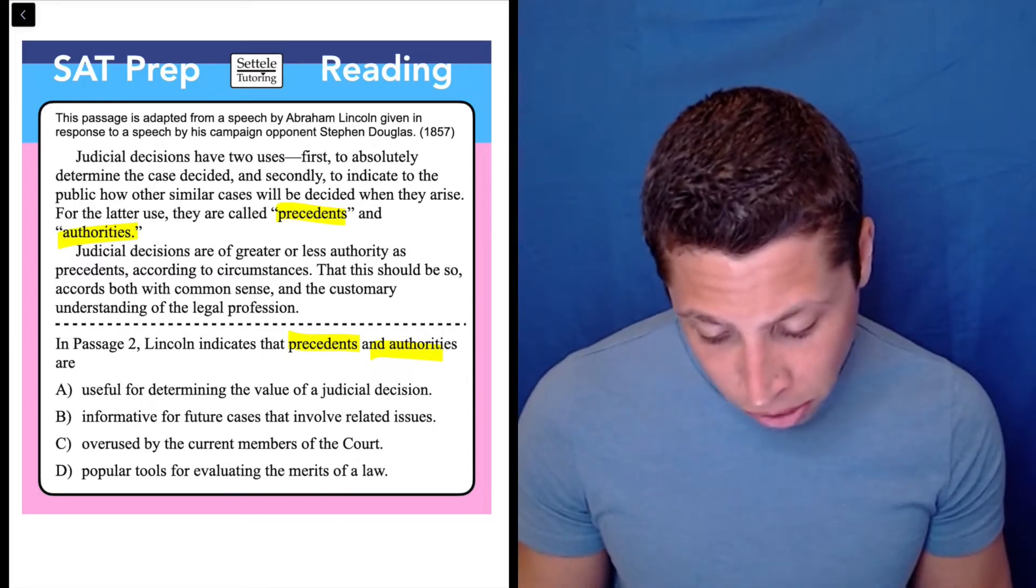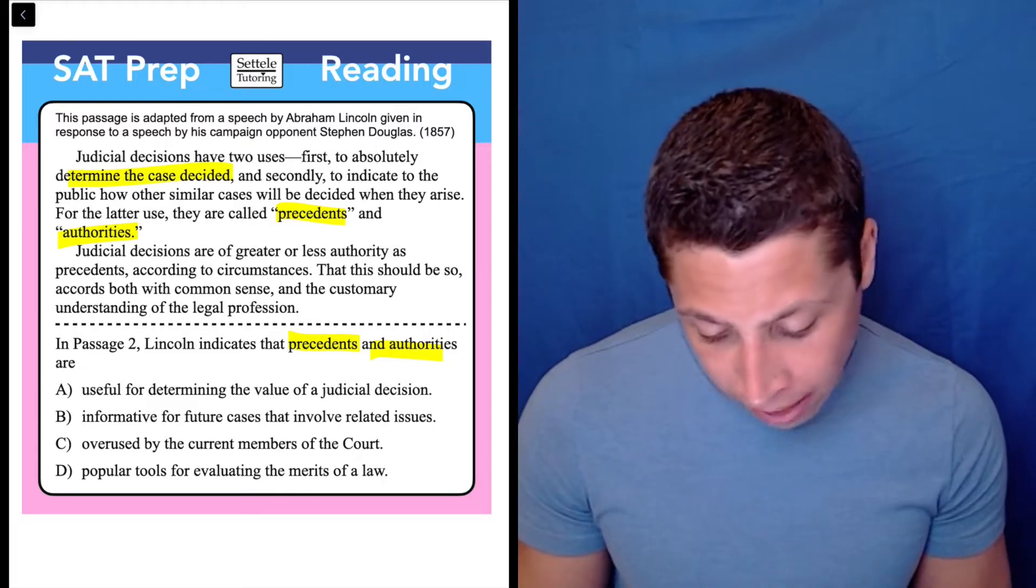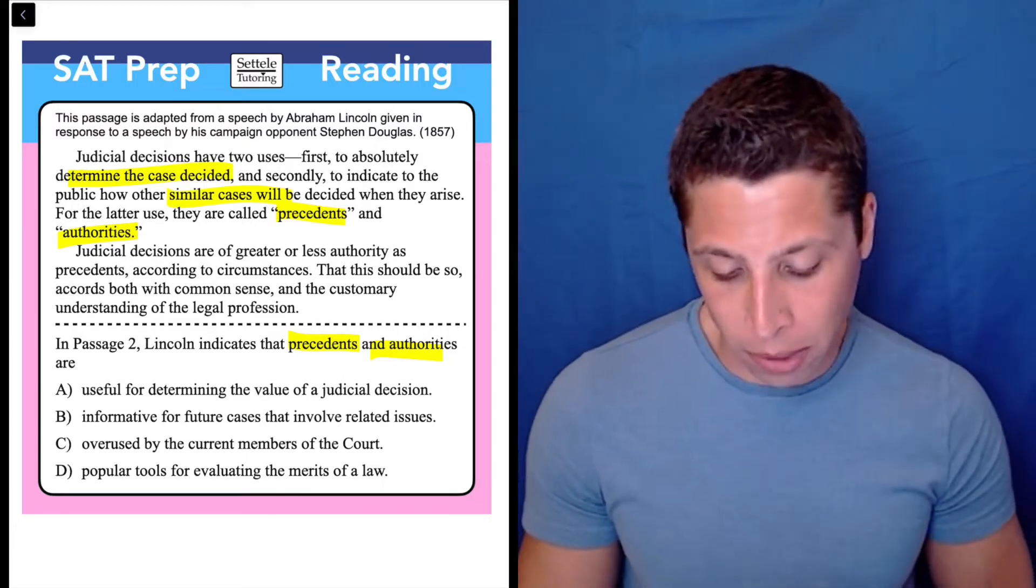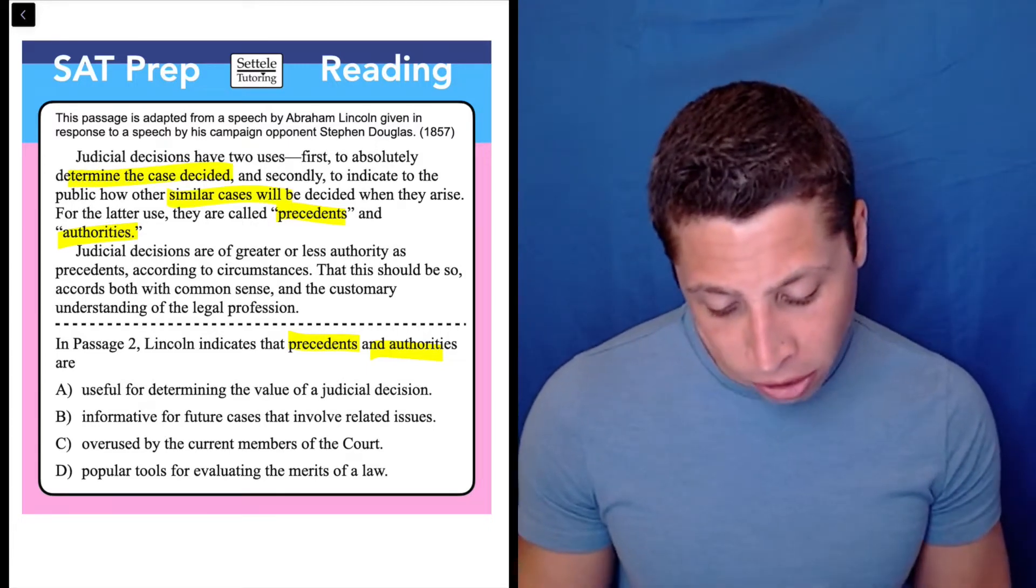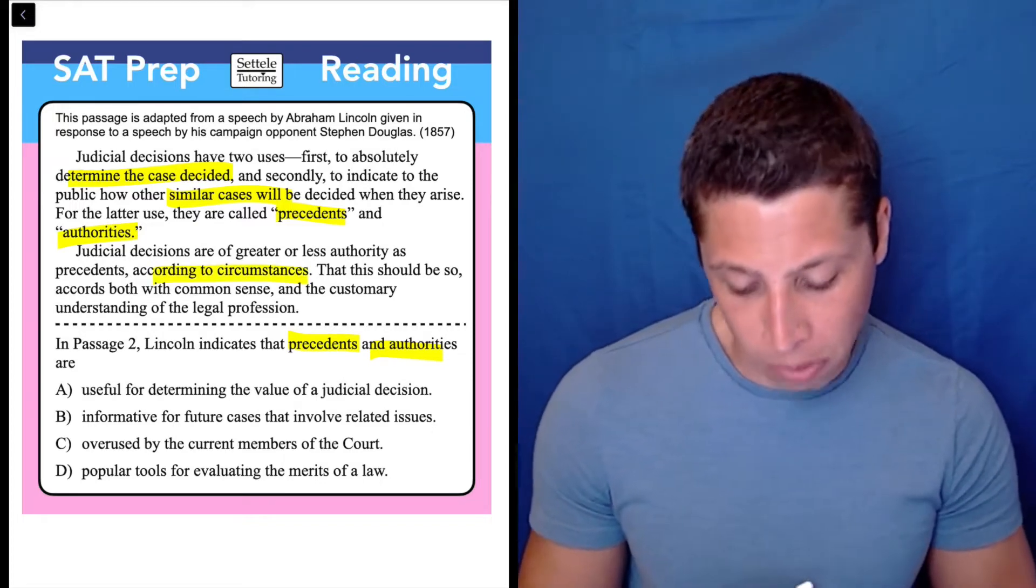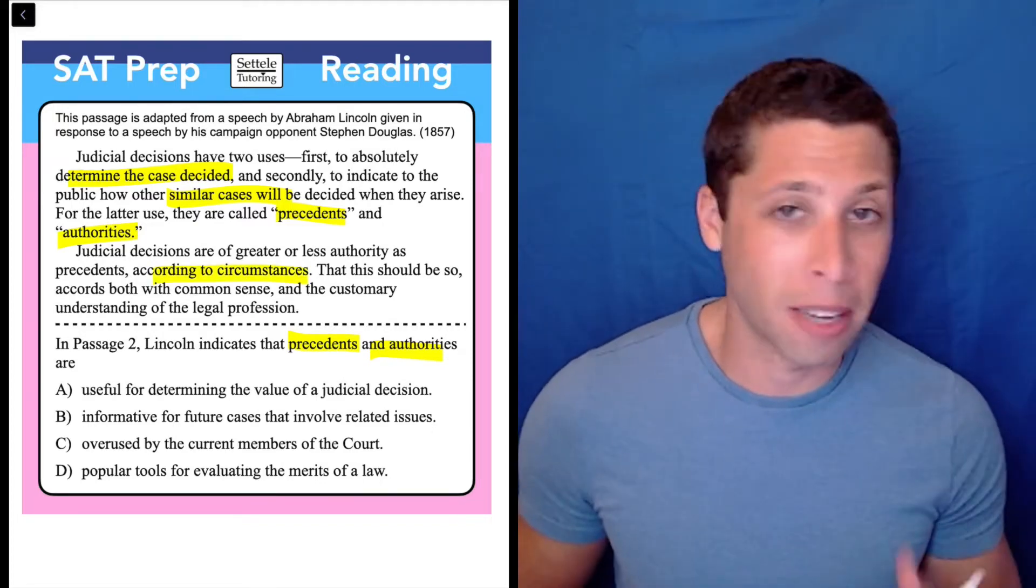Judicial decisions have two uses, to determine the case and to indicate how similar cases will be decided. Reading on, judicial decisions are greater or less authority as precedents according to circumstances. And this is common sense and blah, blah, blah.